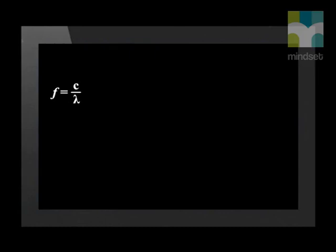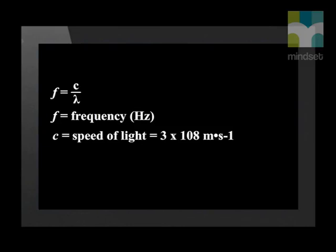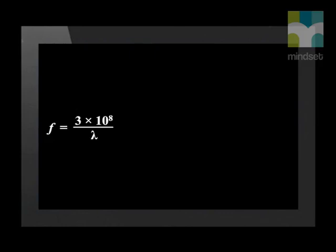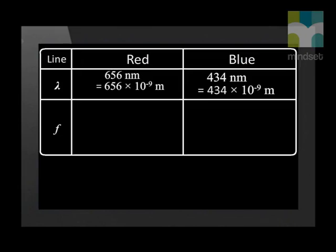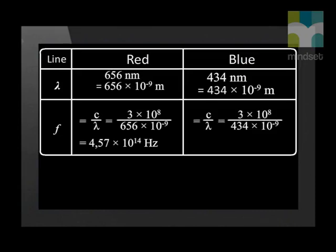We calculate frequency from wavelength using the equation f = c ÷ λ, where f is frequency in hertz, c is the speed of light (3 × 10⁸ m/s), and λ is wavelength in meters. The frequency of red light equals 3 × 10⁸ divided by 656 × 10⁻⁹ m, and similarly for blue light using 434 × 10⁻⁹ m. Notice that red light has a lower frequency than blue light.